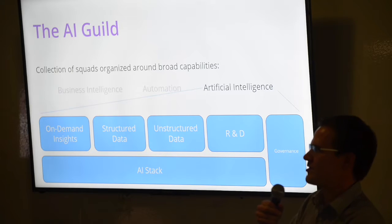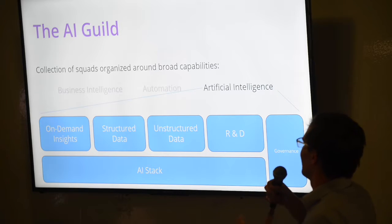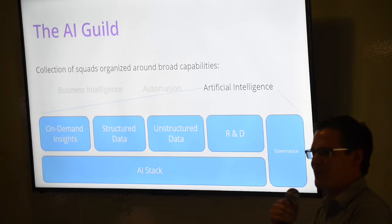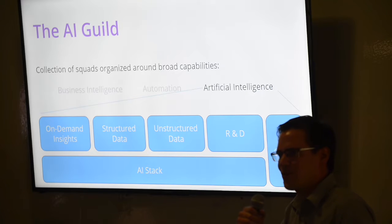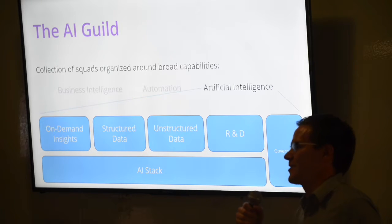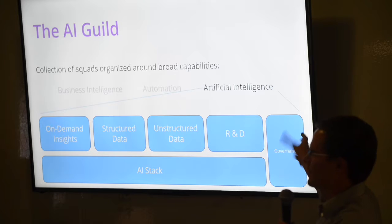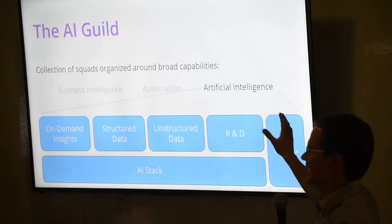We also do have a group looking at R&D. This is somewhat distinguished. We're looking here, say, Horizon 2 style problems. Now, kind of supporting all this on the right here, I highlighted our governance capabilities. It is a core tenet within our artificial intelligence guild, is this idea that we need to make sure we're doing things responsibly. One, because we're an institution that people trust, and two, we want to make sure we're doing the right thing.